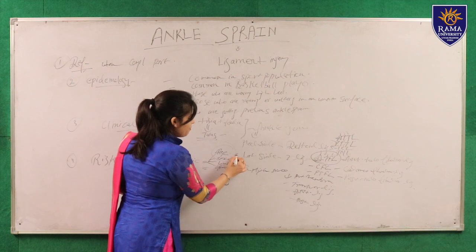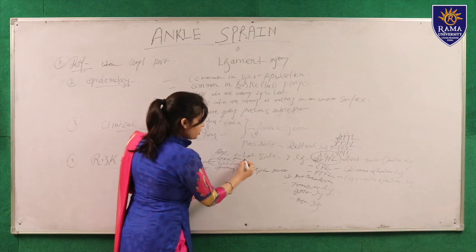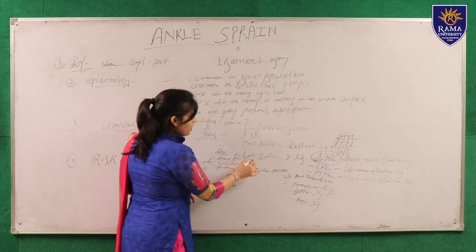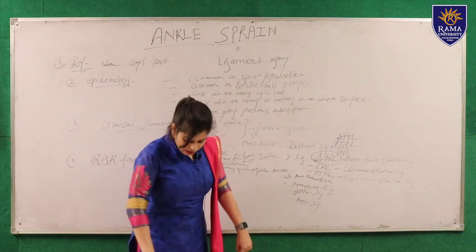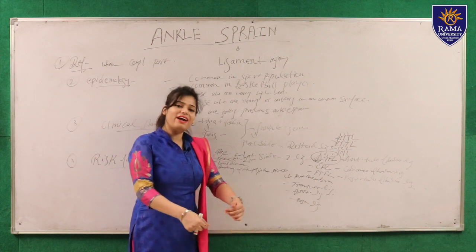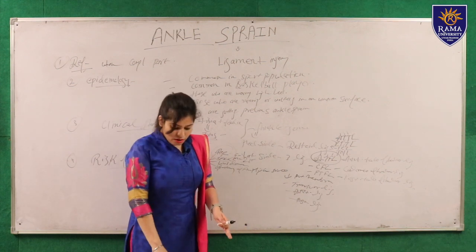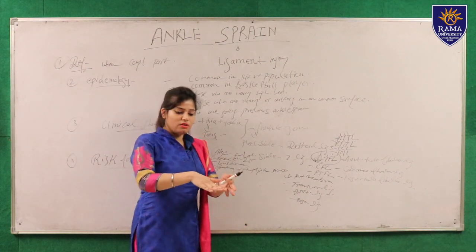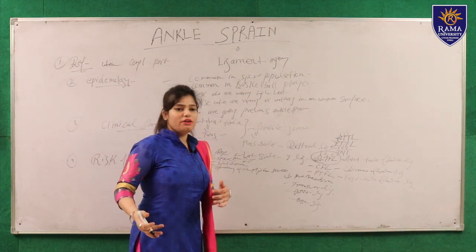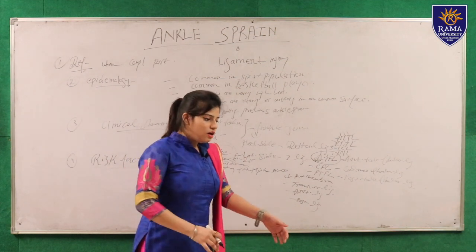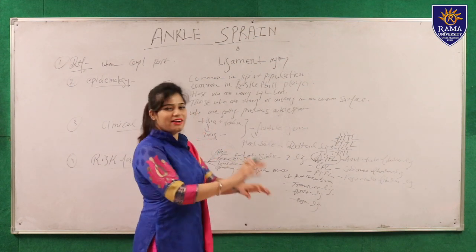Regarding sex, ankle sprain is very much more common in females, with a ratio of 2:1 (female to male). This is because of the wide pelvis, resulting in the knee going into inversion, knock knee, and the foot going outward — so the foot easily goes into inversion. When an outside force acts on the ankle, inversion and plantar flexion occur, making ligament injury more common in females.